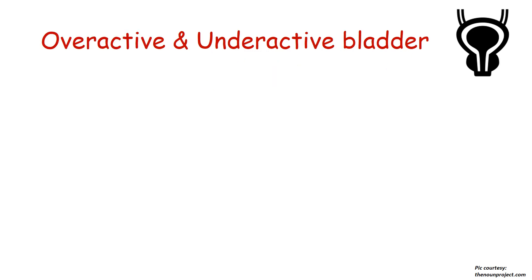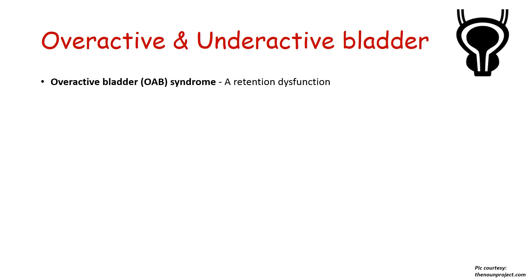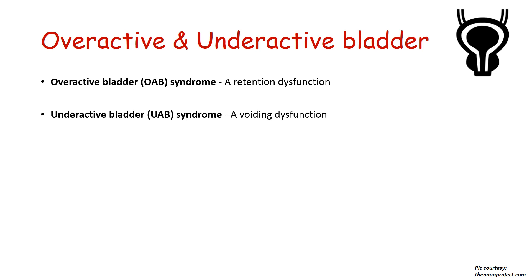There are two other terms used in the medical field: overactive and underactive bladder. Overactive bladder is a retention dysfunction in which the bladder cannot retain urine and passes it frequently — what we refer to as urge incontinence. Underactive bladder is a voiding dysfunction that manifests as overflow incontinence.